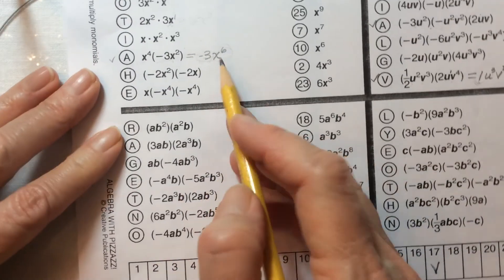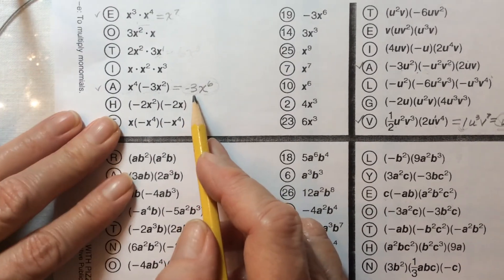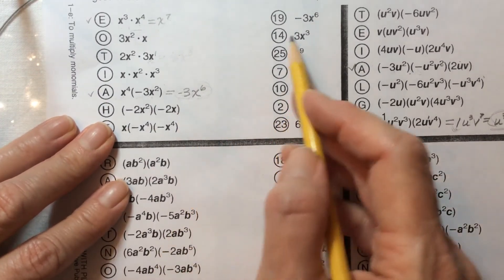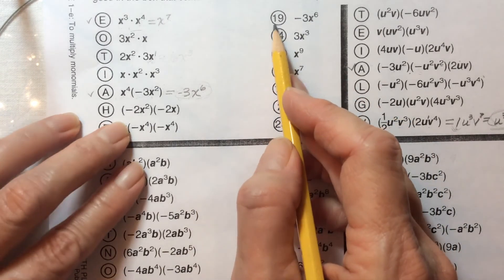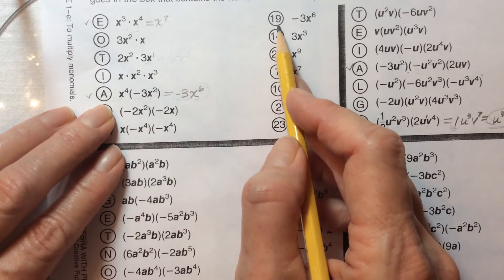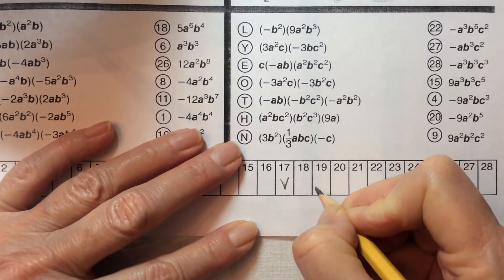So let's see, so for a, we know will go to negative x⁶. So a is going to go into 19. So if we go down here to 19 we can write in a.